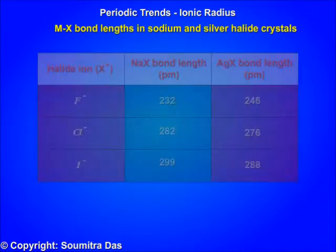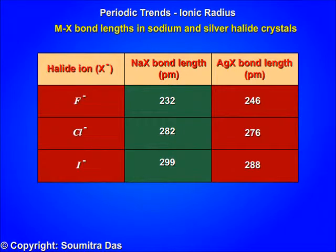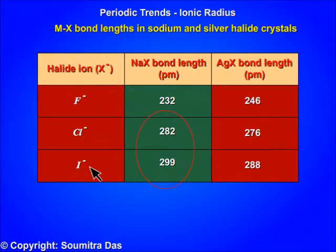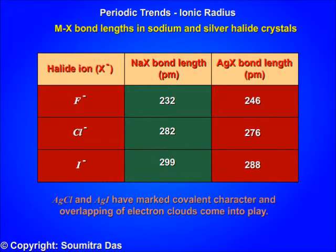Note the table showing the MX bond length in sodium and silver halide crystals. Sodium ions seem to be bigger than silver ions in the chloride and iodide crystals, whereas in fluoride crystals the sodium ion is smaller than the silver ion. This is due to the fact that AgCl and AgI bonds have marked covalent character, and the overlapping of electron clouds comes into play.